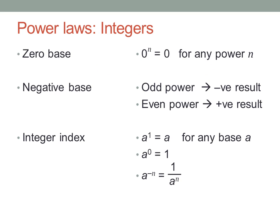Next, remember these rules for what powers mean when either the base or the index is an integer. If the base is zero, zero multiplied by itself any number of times is still zero. If the base is negative, then the sign of the result depends on whether the index is odd or even. If it's odd, the result is negative. If it's even, the result is positive.